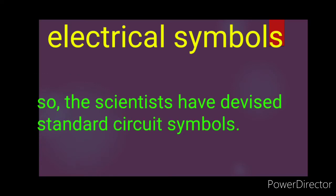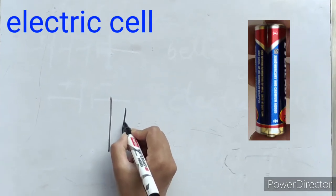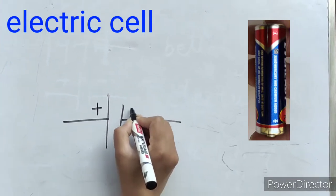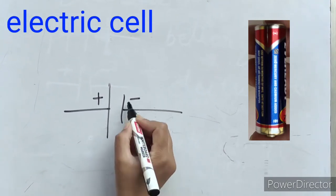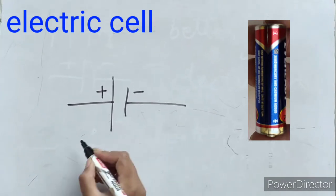So scientists have devised standard circuit symbols. I will discuss some electric symbols. This is the symbol of electric cell: the long line represents the positive terminal and the small line represents the negative terminal.